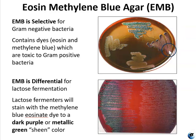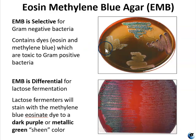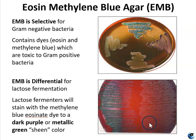On an EMB plate showing good growth with a dark purple color, you would say the specimen is most likely gram-negative and ferments lactose. If there is good growth but no color change to green or purple, you would say the specimen is most likely a gram-negative species that does not ferment lactose. If growth is poor compared to nutrient agar, the specimen is most likely gram-positive and not a fermenter of lactose. On a two-species plate, both showing good growth, the one with a color change ferments lactose and the one without does not.